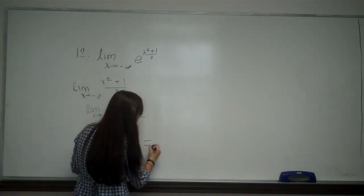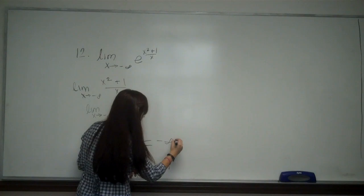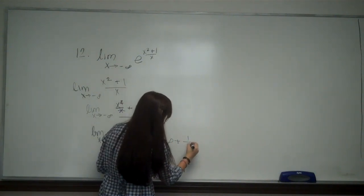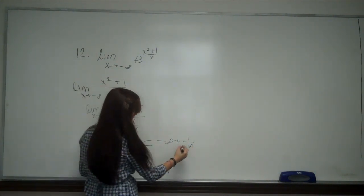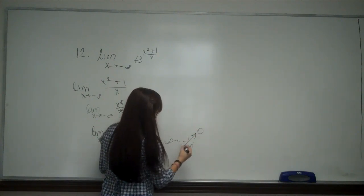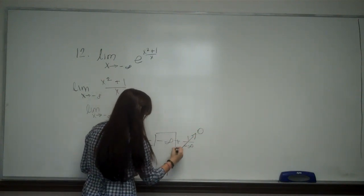When I plug in negative infinity, I get negative infinity plus 1 over negative infinity. This is going to go to 0, so all I'm left with is negative infinity.